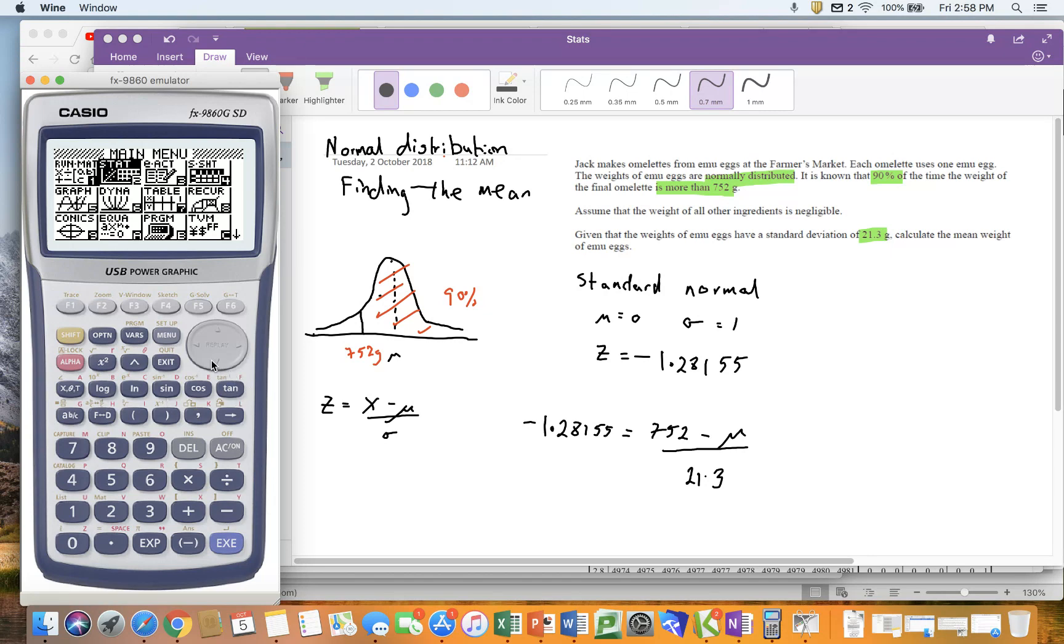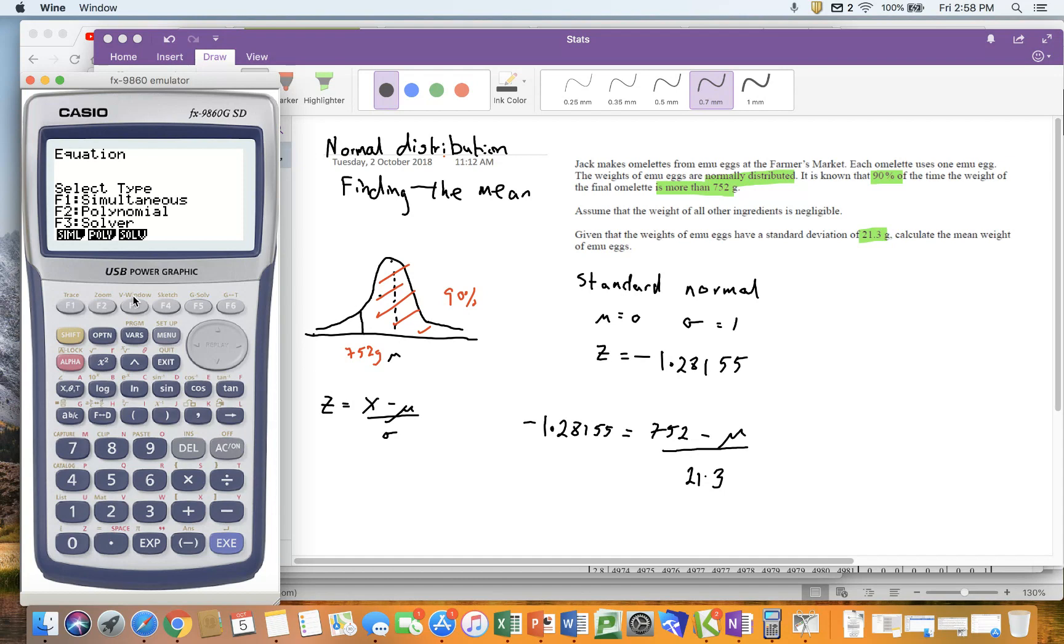Or you can go to the equation function and you can go to solver. So it's minus 1.28155 equals, so equals is shift and decimal point. I've got to put some brackets in. 752 minus, now I can't put mu in as a variable, so I'm going to use x. And I'm going to divide by 21.3. And it comes up with an answer, but that isn't actually an answer. It's just the first guess. We now have to press solve for it to give me the right answer. And it is telling me that mu is 779.3.